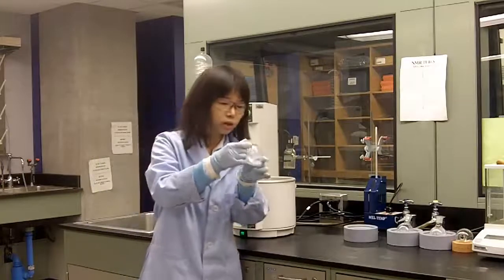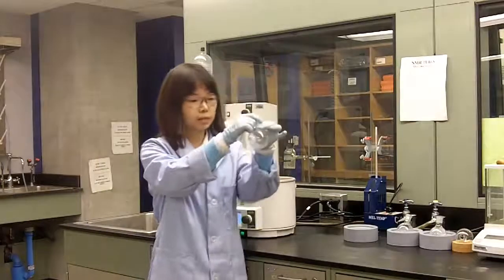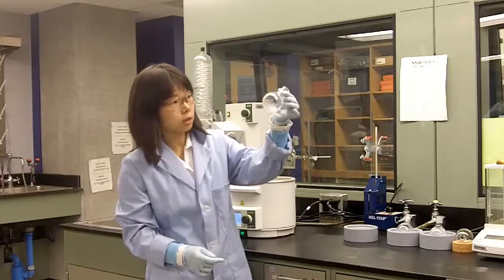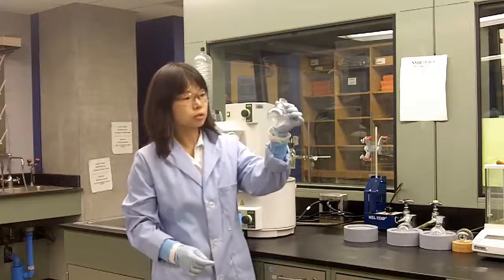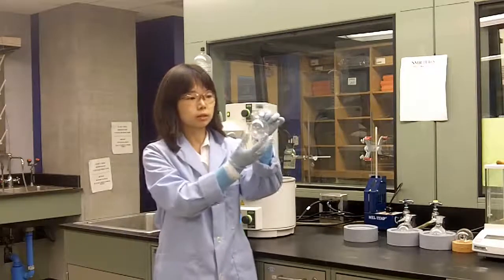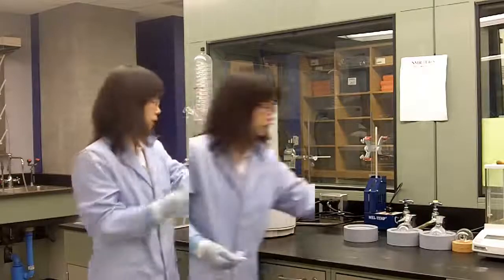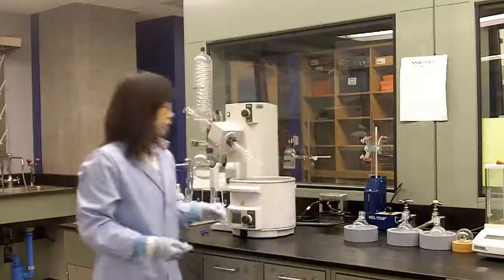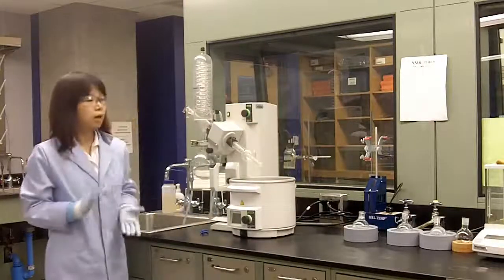You can see after the solvent evaporates, your compound is coming out as white solid. It's not a lot of solid, so you probably cannot see it very clearly. It's a white crystalline solid. That's the steps to use the rotary evap.